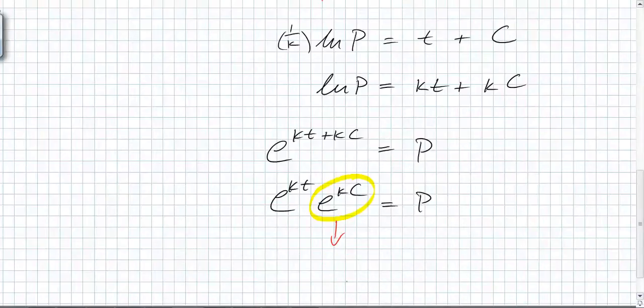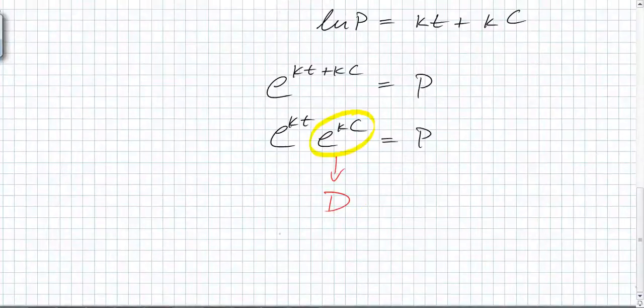Great. So what do we now have? We have P of t is equal to d times what? e to the kt. You're going to see this all over the place. All over the place. This is a function that models the population with respect to time where the population growth increases with direct proportion to the population.